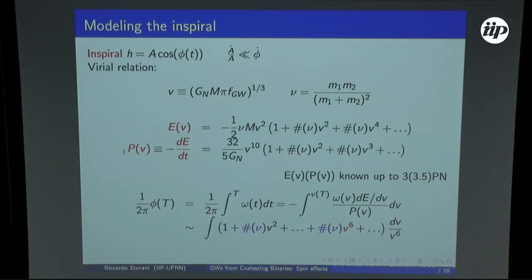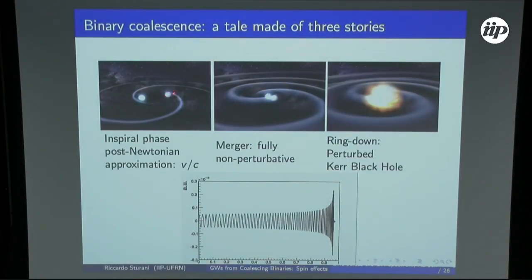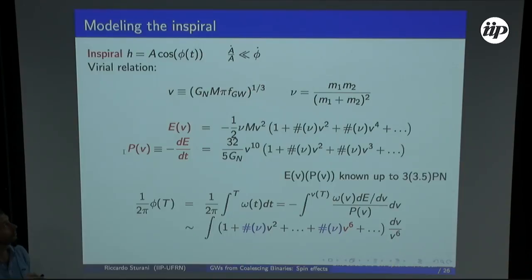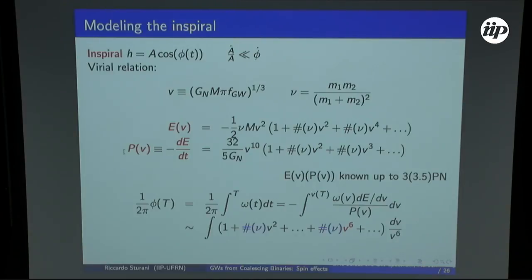We are focusing on the inspiral part. You have two objects with well-defined m1, m2, and well-defined angular velocity of the system. We write the waveform as an amplitude which is slowly varying in time times a phase which is oscillating. The oscillation happens with a phase that is growing in time, and the derivative of the phase we assume is the same as the orbital period of the binary.